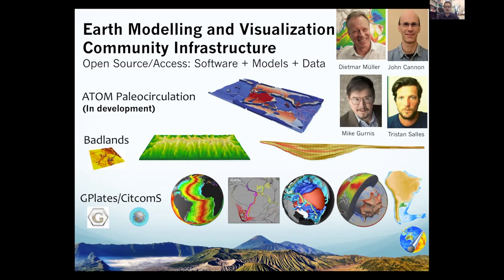In the future, we're hoping to have more integrated models of atmospheric ocean circulation. G-plates is probably what I'll focus most on — that's been led by Dietmar Muller and Mike Gurness at Caltech. John Cannon is our lead developer, and Tristan Sahl is the lead developer of Badlands.